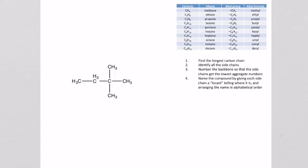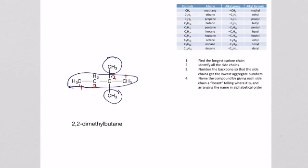Here's another example with a slightly different compound. It has the same four-carbon backbone, but now there are two methyl groups on the side. We number it the same way: one, two, three, four. Because there are two methyls, we use the prefix 'di' and call it 2,2-dimethylbutane. In stick form, there's the four-carbon backbone with one methyl and another methyl shown.